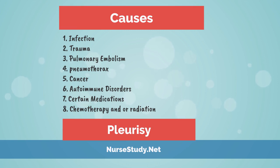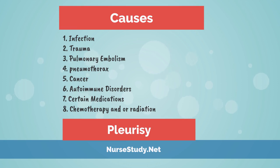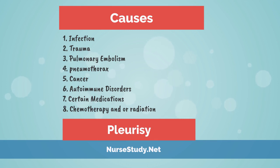4. Pneumothorax — the buildup of air in the lungs following chest trauma or mechanical ventilation. 5. Cancer — when a tumor grows in the pleural cavity, fluid buildup occurs, causing pleurisy and pleural effusion. 6. Autoimmune disorders — illnesses such as lupus or rheumatoid arthritis involve the immune system abnormally attacking healthy tissues.